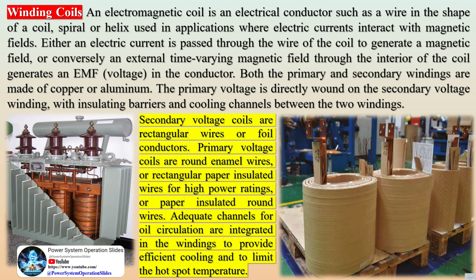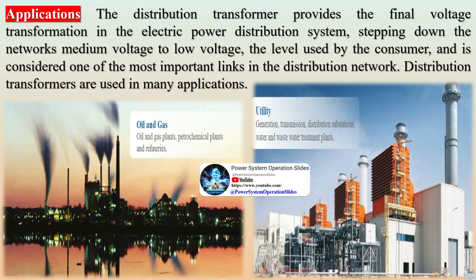IEC 60137 Insulated Bushings for Alternating Voltages Above 1000 V. IEC 60529 Classification of Degree of Protection Provided by Enclosures. IEC 60354 Loading Guide for Oil Immersed Transformers. IEC 60551 Measurement of Transformer and Reactor Sound Level.